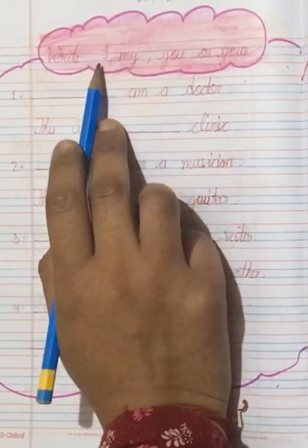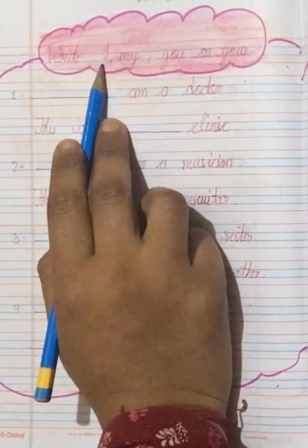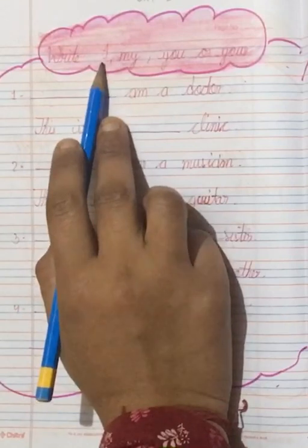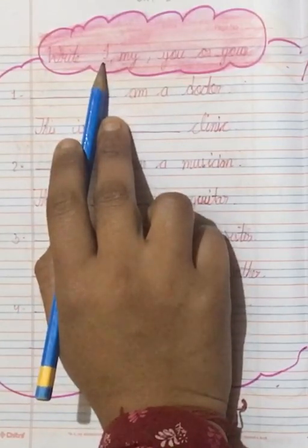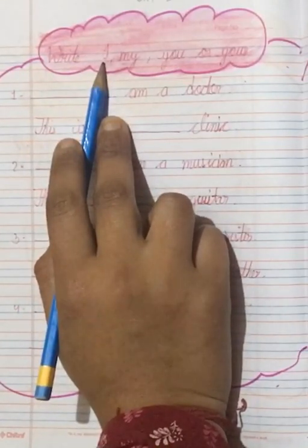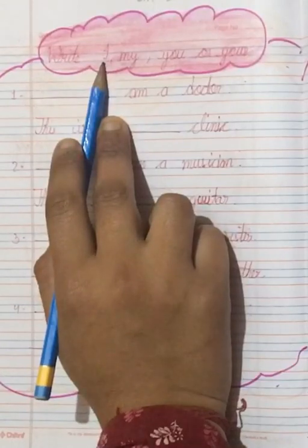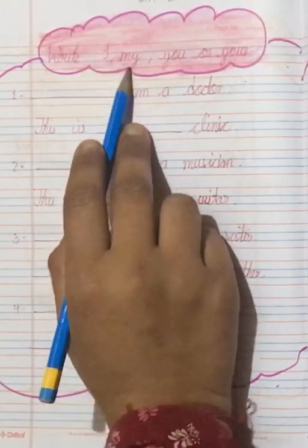So students, listen carefully. I ka ham hamisha ham kaha par use karenge? M ke saath. M ke saath ham I ka use karenge. Jahaan par ham M ka use karthay hai, waha peh ham I ka zaroor, I ka hamisha M ke saath use hota hai.